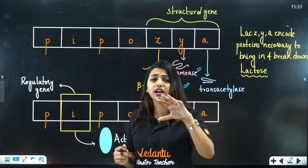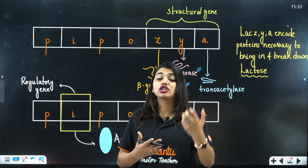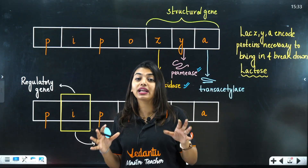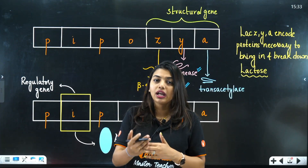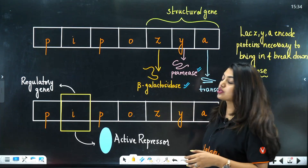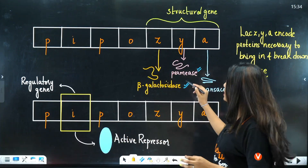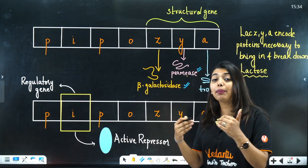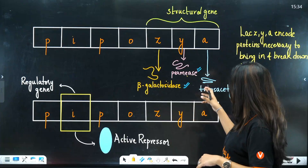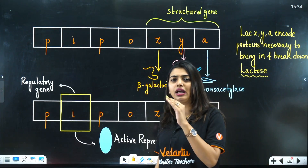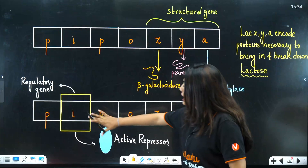In E. coli, when glucose is abundant, it won't need lactose. But when glucose is less and lactose is available in the surroundings, E. coli will take it in and the gene gets switched on. Beta-galactosidase breaks down lactose into galactose and glucose; permease increases the permeability of the cell wall so E. coli can take in more lactose; and transacetylase, though no specific function is mentioned in NCERT, enhances beta-galactosidase activity.